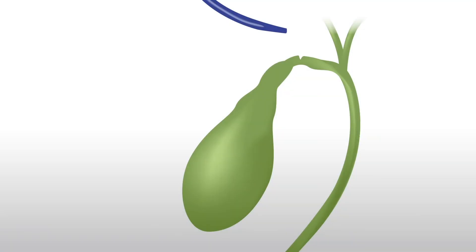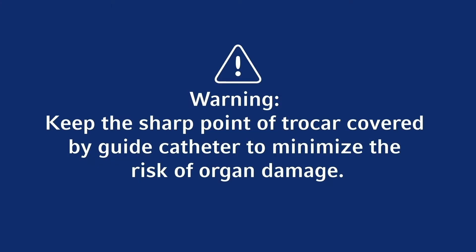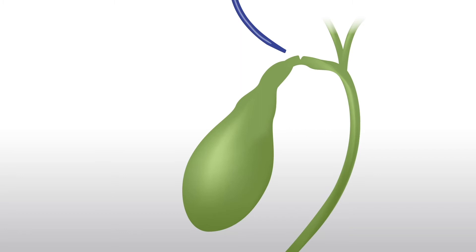Advance assembly into abdominal cavity toward cystic duct. Warning: keep the sharp point of trocar covered by guide catheter to minimize the risk of organ damage. Withdraw trocar completely when guide catheter is near the cystic duct. Position tip of guide catheter adjacent to cystic duct opening.